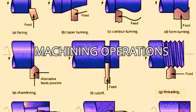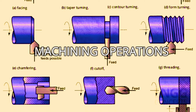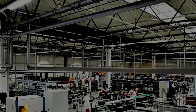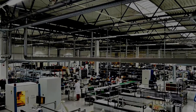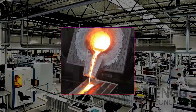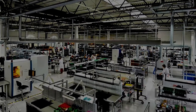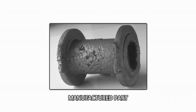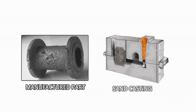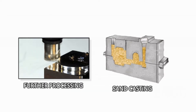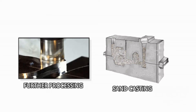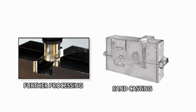To make the part usable, we may need to carry out machining operations. If machining is not economical, we need to remelt and produce the part again. Because dimensional accuracy in sand casting is not so good, we cannot use cast parts directly for final use. Hence further processing is required after casting.